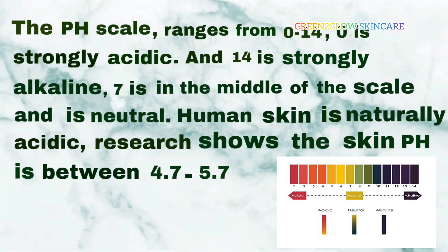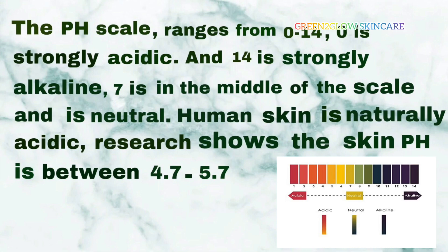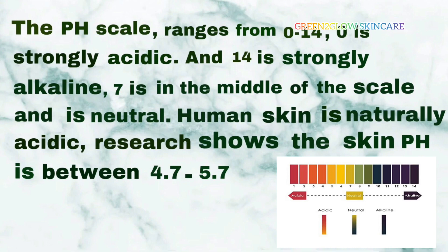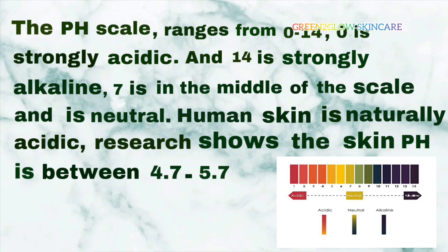A pH meter is very important to know the pH of whatever you are formulating. The pH scale ranges from 0 to 14 — 0 is strongly acidic and 14 is strongly alkaline, and 7 is in the middle of the scale and is neutral. Human skin is naturally acidic; research shows the skin pH is between 4.7 to 5.7, and our skincare formulation should be within the range of the skin's pH.